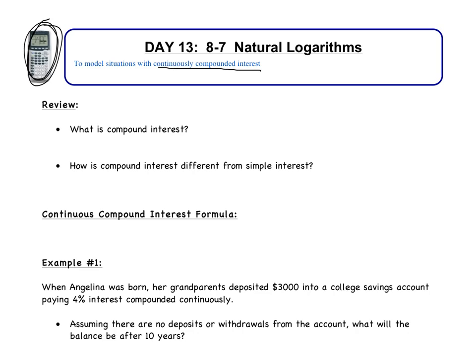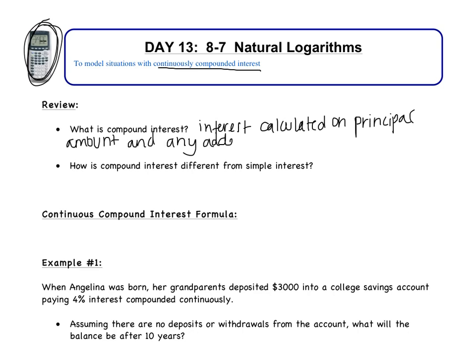Most of you have a bank account, and you know that when you put money in your bank account you get interest back on the money that you put in. It's the bank's way of saying thank you for investing money with us. Compound interest is interest calculated on the principal amount and any added interest — you get interest on what you put in and any other interest that you have.